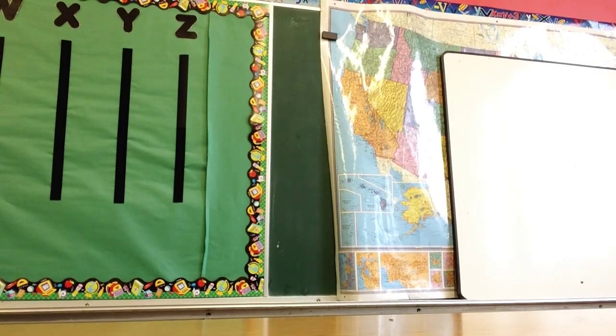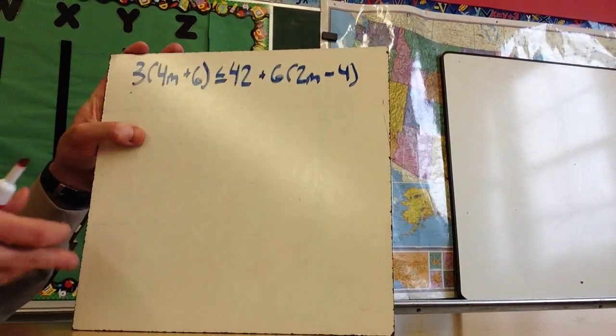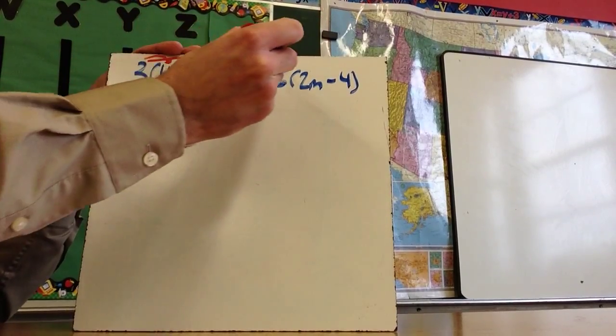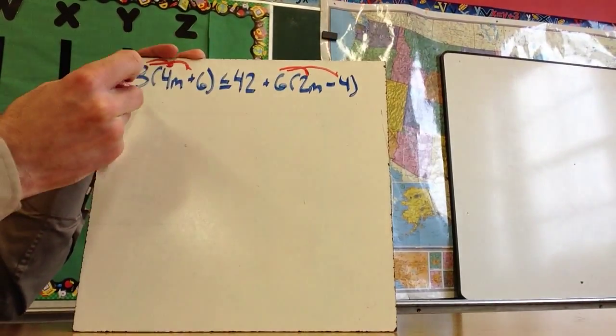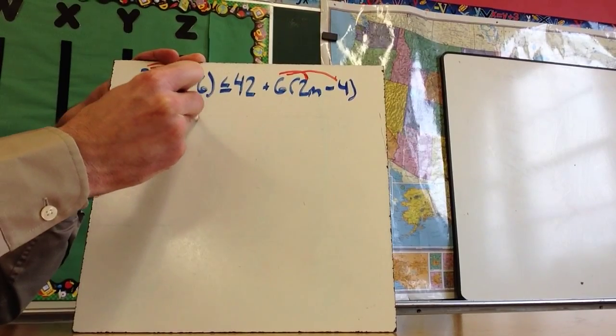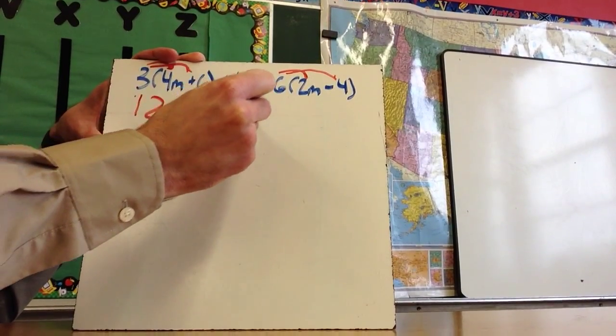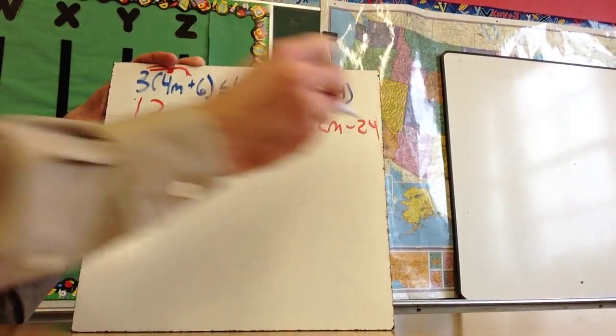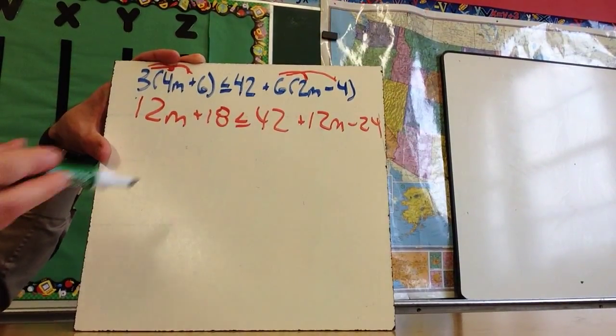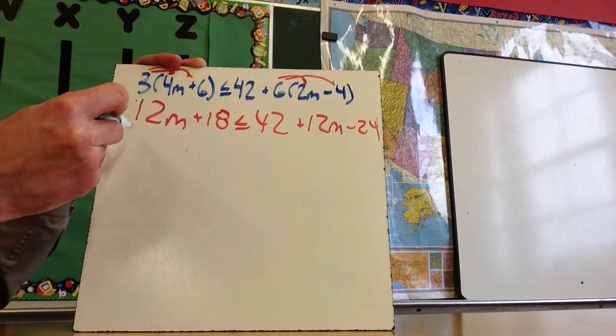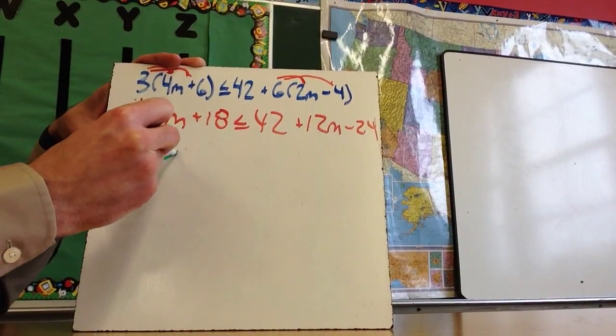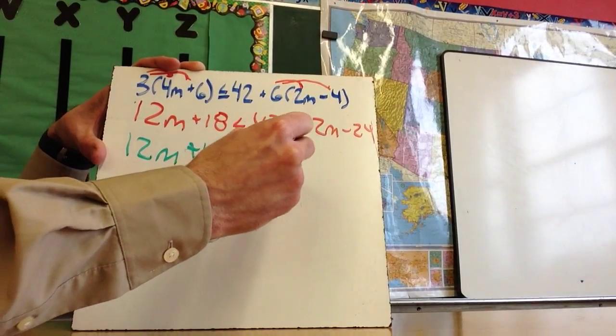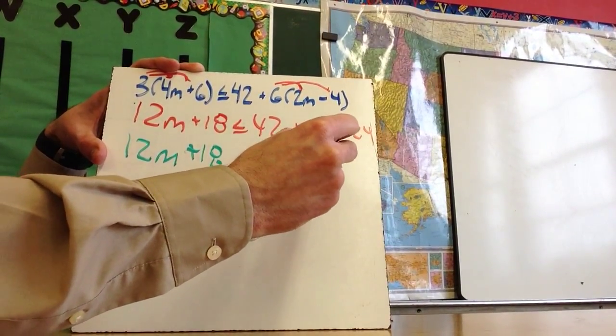Now some of you may know the next example that's coming, so I'm going to kind of go quickly through the distributive property part of this. And so I got 12m plus 18 less than or equal to 42 plus 12m minus 24. And then when I combine like terms on the right side, I should get 12m plus 18 is less than or equal to 12m plus 18.